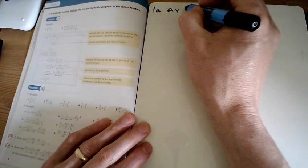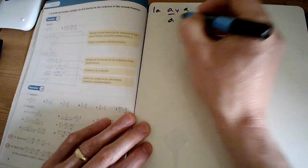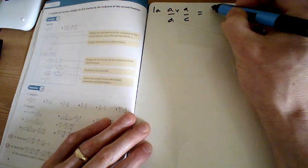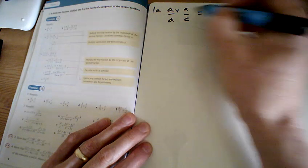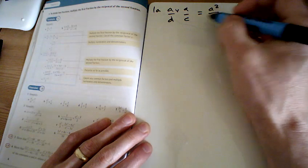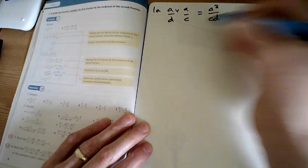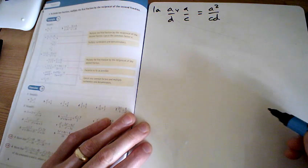First one, we've just got to multiply a couple of fractions together. So we're just going to times the top, a times a is a squared, and times the bottom, c times d is cd. Just putting it in alphabetical order, no need, you could put dc as well.